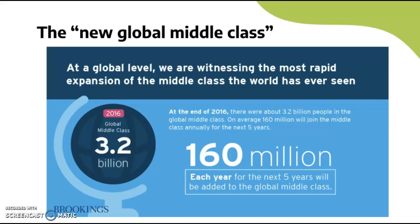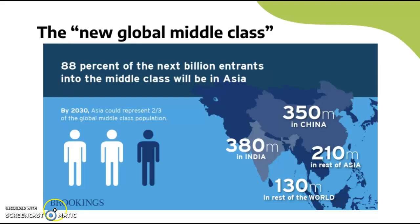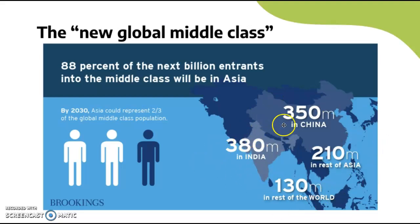We are witnessing the most rapid expansion of the middle class the world has ever seen. At the end of 2016, there were about 3.2 billion people in the global middle class, and on average 160 million will join the middle class annually for the next five years — very large growth. According to Brookings, 80% of the next billion entrants into the middle class will be in Asia, and by 2030 Asia could represent two-thirds of the global middle class population.